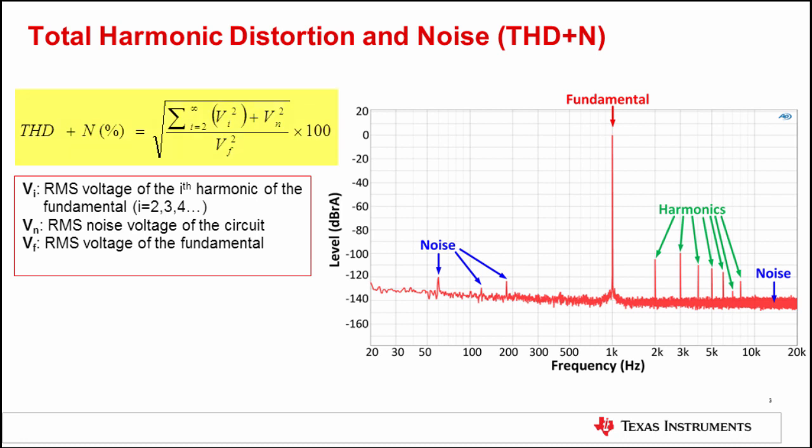The equation for THD plus N is given on the left-hand side of this slide. It is calculated by taking the sum of all the harmonics squared, added to the RMS noise voltage squared, and divided by the fundamental RMS voltage squared. We then take the square root of this quantity. For a percentage format, we multiply by 100. If this were in dB, we would take 20 times the log base 10 of this number. What we are seeking to describe is the purity of the output signal. Harmonics and noise are all corruptions of the output signal, which we would like to minimize to reduce the total harmonic distortion and noise.